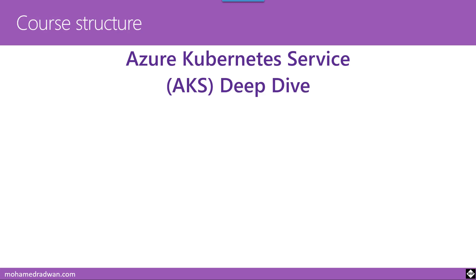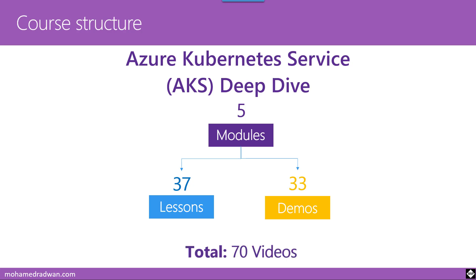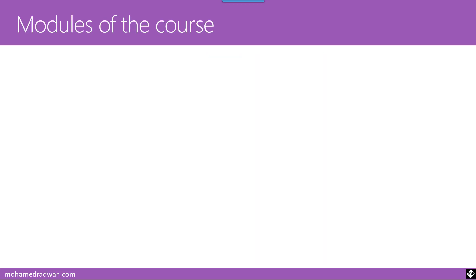The Azure Kubernetes Service deep dive course is divided into five modules, and each module is divided into lessons and demos. We have 37 lessons and 33 demos in total, so the total number of videos for the entire course is 70 videos, including all the lessons and demos.